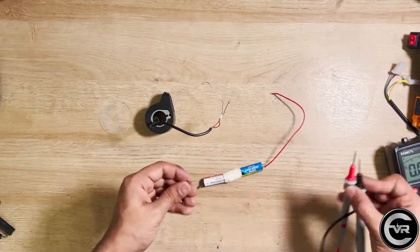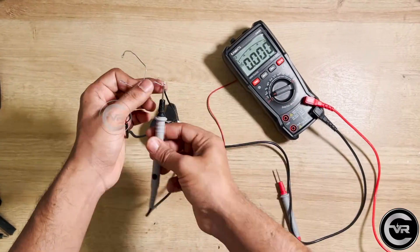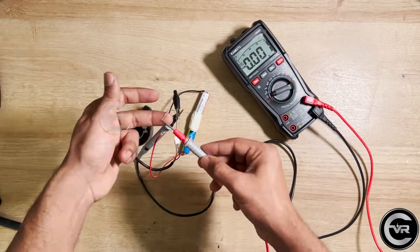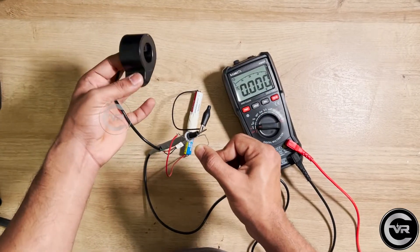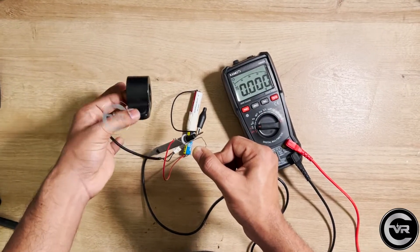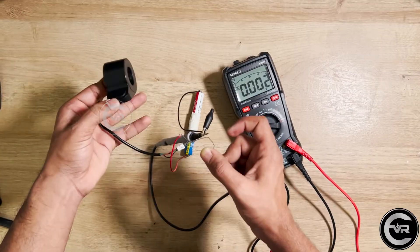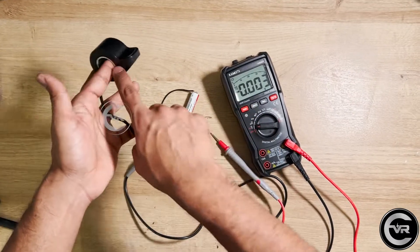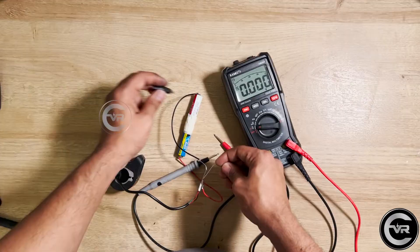We did all the same connections which we did earlier in this video. Now when we twist the throttle, there is nothing happening. The voltage doesn't change at all. This means the throttle is bad. So this is how you can check your throttle using a multimeter.